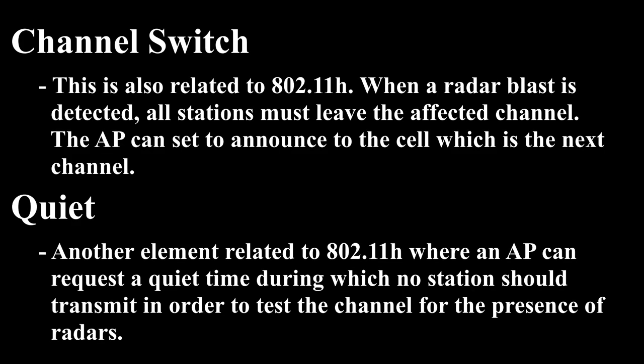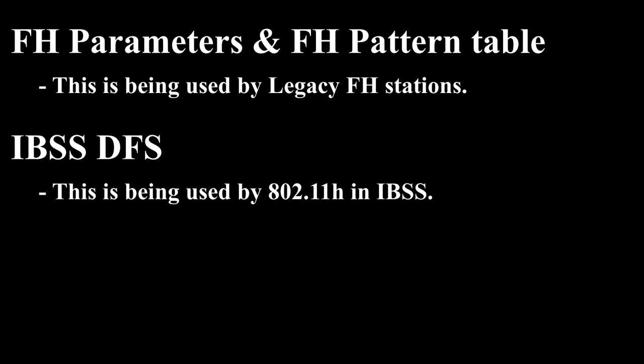Channel Switch (6 byte): Also related to 802.11h. When a radar blast is detected, all stations must leave the affected channel. The AP can set this element to announce to the cell which channel is next. Quiet (8 byte): Another element related to 802.11h, where an AP can request a quiet time during which no station should transmit, in order to test the channel for the presence of radars. FH Parameters and FH Pattern Table are used by legacy FH stations. IBSS DFS is used by 802.11h in IBSS.